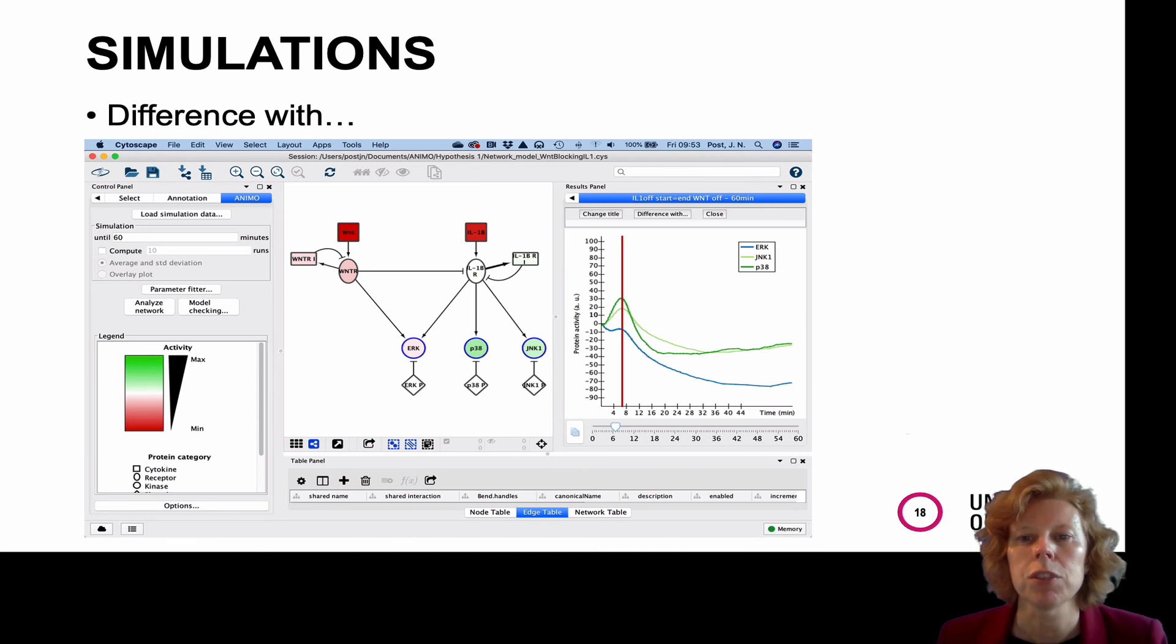Lastly, you can see the difference on the network in response to different simulations by selecting two data sets and pressing difference with. In the result panel, you will see the variation in activity of the nodes in time as a deviation from zero.